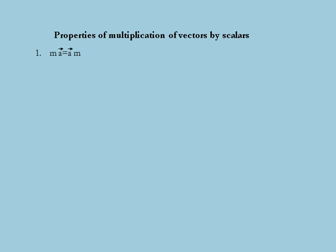Next we are going to discuss some properties of multiplication of vectors by scalars. We may write the multiplication of a scalar m with vector a as the multiplication of vector a with scalar m. Next, m times n into vector a is equal to m into the scalar multiplication of vector a with n, which is equal to mn into vector a, where m and n represent scalar quantities and a represents the vector quantity.